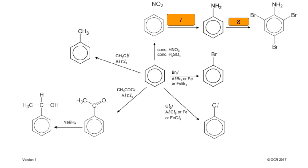Number 7 is the reduction of nitrobenzene to phenylamine. The reducing agent is a mixture of tin and concentrated hydrochloric acid.